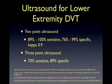In 2000, Blavis et al. had a kappa of 0.9 when comparing two-point color duplex ultrasound to formal vascular lab results for the detection of lower extremity DVTs. In 2010, Crisp et al. found 100% sensitivity and 99% specificity for two-point ultrasound. Klein et al. in Annals of Emergency Medicine in 2008 showed 70% sensitivity and 89% specificity using three-point ultrasound compared to formal radiology.